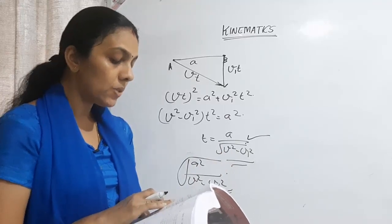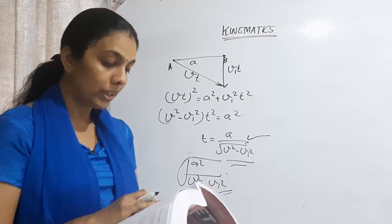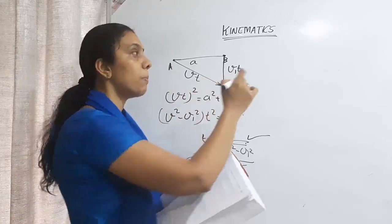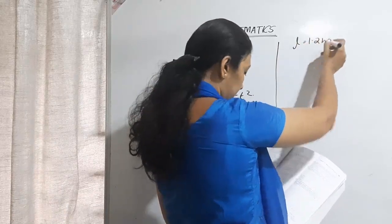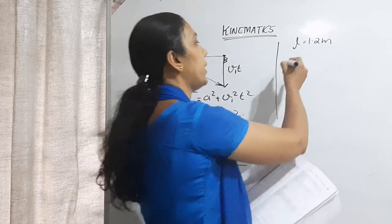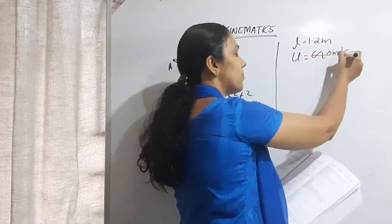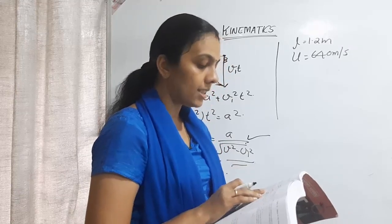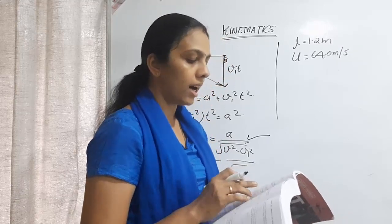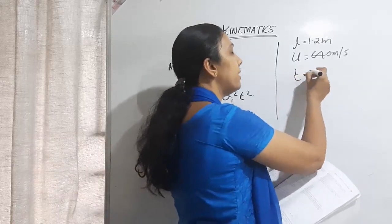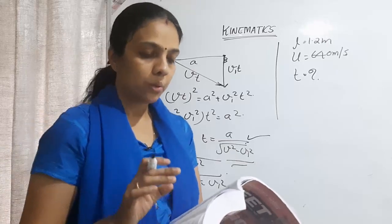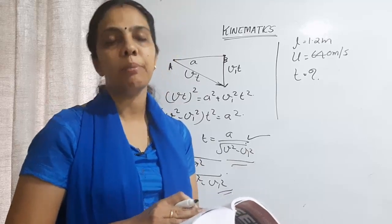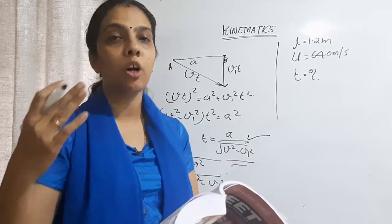Next question: a bullet emerges from a barrel of length 1.2 meters with a speed of 640 meters per second. Assuming constant acceleration, find the approximate time that the bullet spends inside the barrel after the gun is fired. The bullet is emerging out with a final speed of 640 m/s.